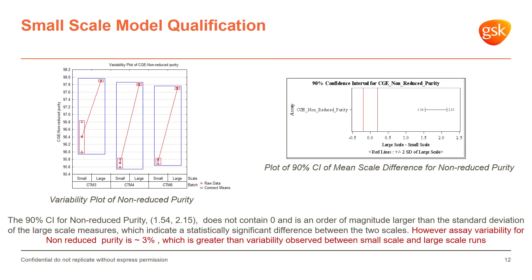The 90% confidence interval for non-reduced purity did not contain zero and is an order of magnitude larger than the standard deviation of the large-scale measurement, indicating a statistically significant difference between the two scales. However, our analytical colleagues mentioned that the non-reduced purity assay has a variability of about 3%, which is far greater than the variability observed in the small-scale and large-scale runs. Hence we were able to conclude scale equivalence using the variability of the assay.